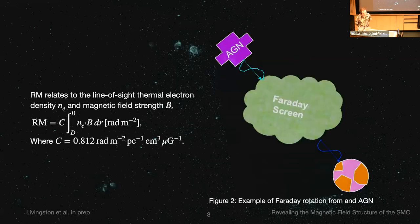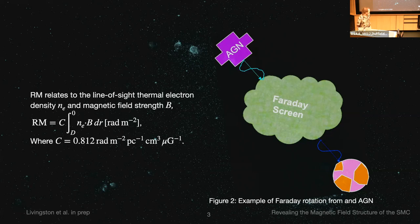In terms of the theory behind how we measure this, we primarily measure rotation measure, which is what we get when we have polarised synchrotron emission. Mostly we get this from AGN, but you can also get this from diffuse emission through a Faraday screen. This rotates the polarised signal. The rotation measure relates to both the line-of-sight thermal electron density NE and the magnetic field. We expect polarisation fractions of the AGN we measure to be about 70 to 75% as a maximum.